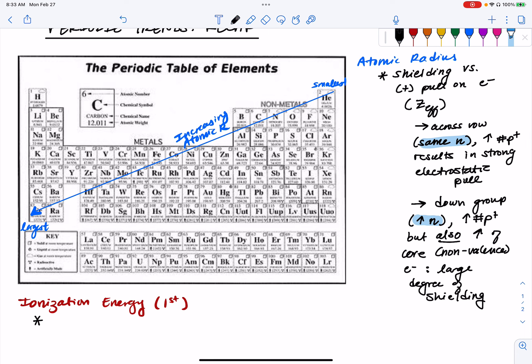And the general idea is a lower effective nuclear charge means that there's going to be less of a pull on those electrons and we are easier to ionize. Meaning that valence or first valence electron is readily removed.